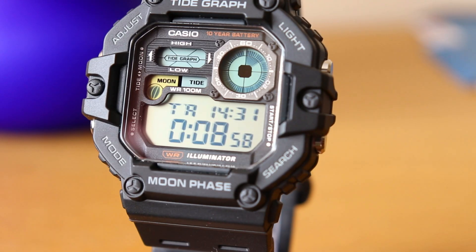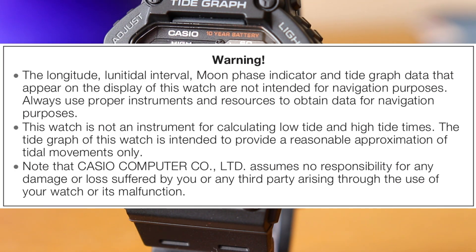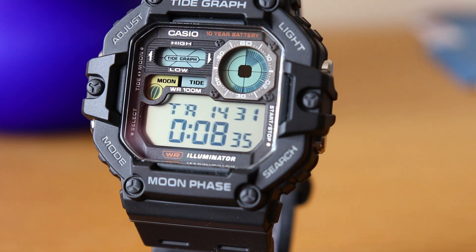Now let's test for the accuracy of the tide graph. Before we do so, I want to set your expectations by drawing your attention to the information in the manual. In the second paragraph of their disclaimer it says: 'This watch is not an instrument for calculating low tide and high tide times. The tide graph of this watch is intended to provide a reasonable approximation of tidal movements only.' But let's see how reasonable an approximation it gives.